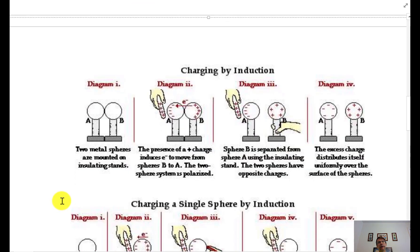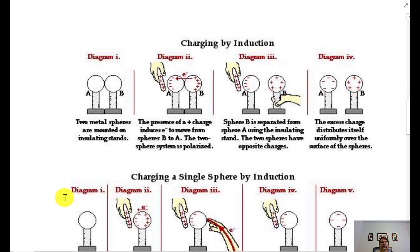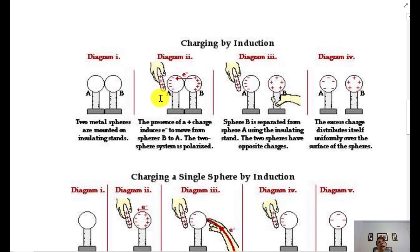Here are some examples of induction. With two metal spheres A and B touching each other, both uncharged — if you bring a positive rod close but don't touch it, it pulls electrons to the left, so sphere B is missing electrons and becomes positive. Both spheres are now charged, but they won't stay charged if you remove the rod. The electrons didn't travel all the way from the right, but there's a net movement to the left.